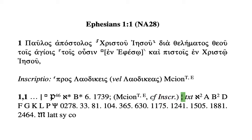The broken vertical line means we've stopped talking about the evidence for the omission of 'en Ephesō,' and now we're going to discuss the evidence for what's printed in the text — TXT. The evidence that supports the presence of 'en Ephesō' is the corrected version of Codex Sinaiticus, or Aleph superscript c.